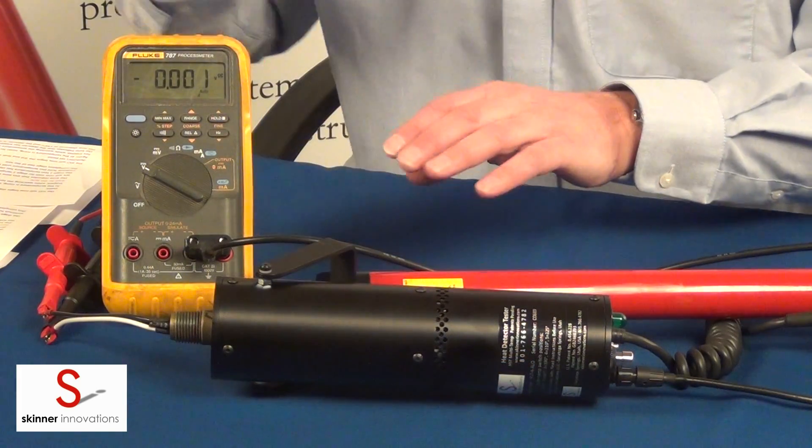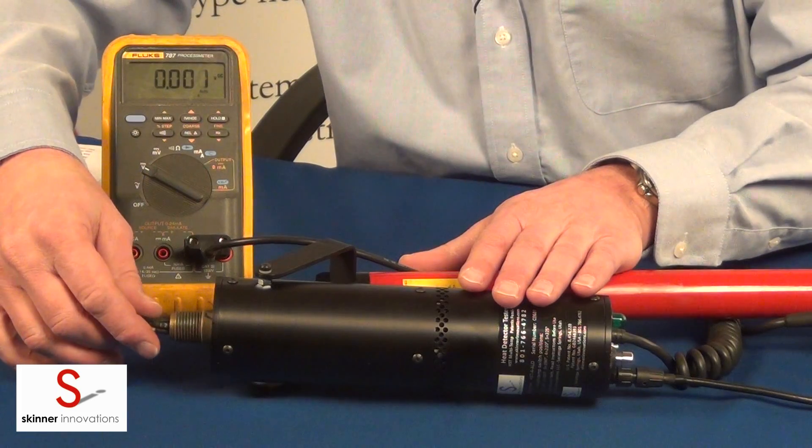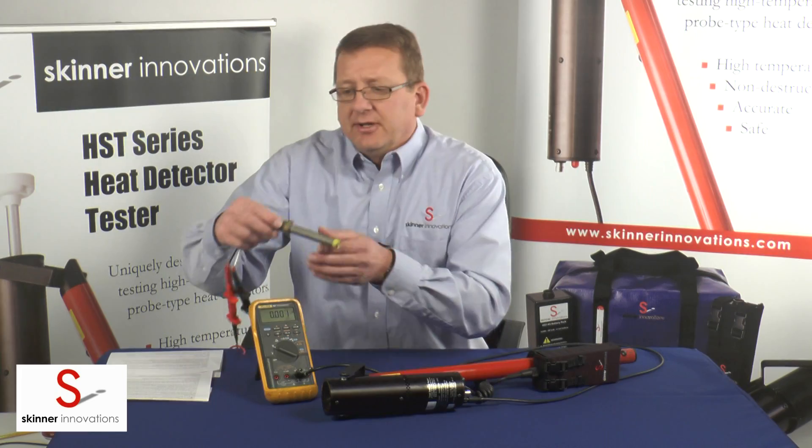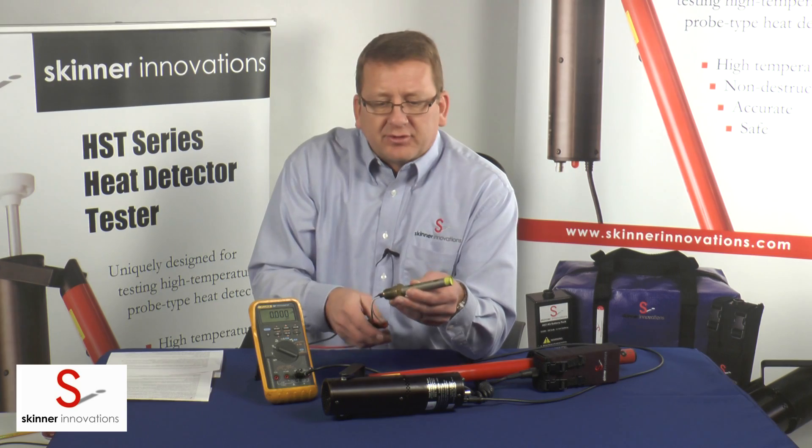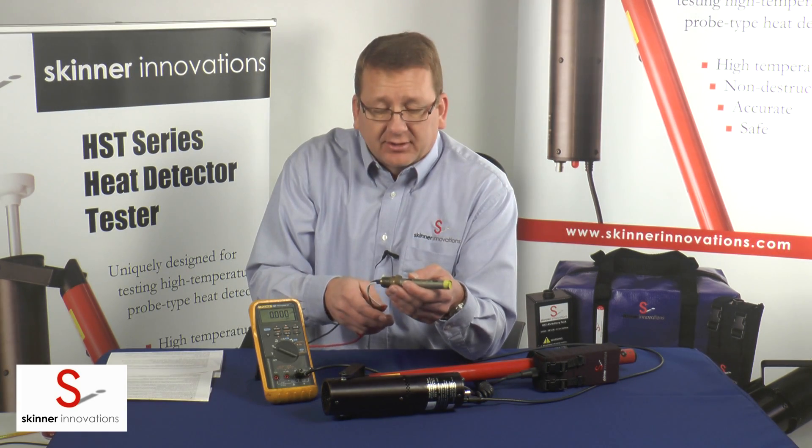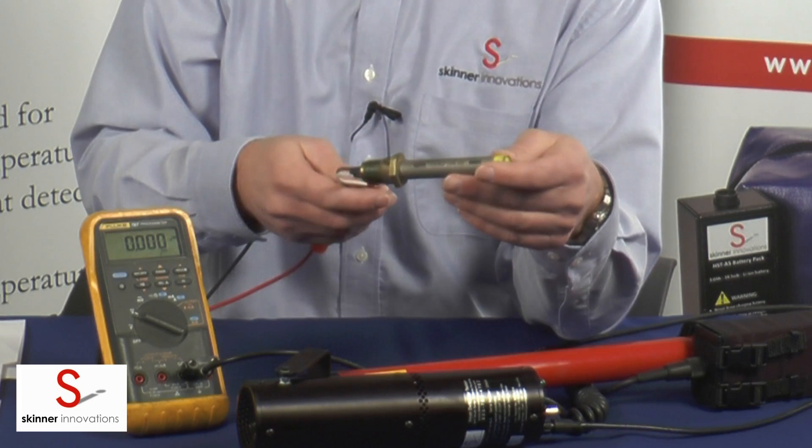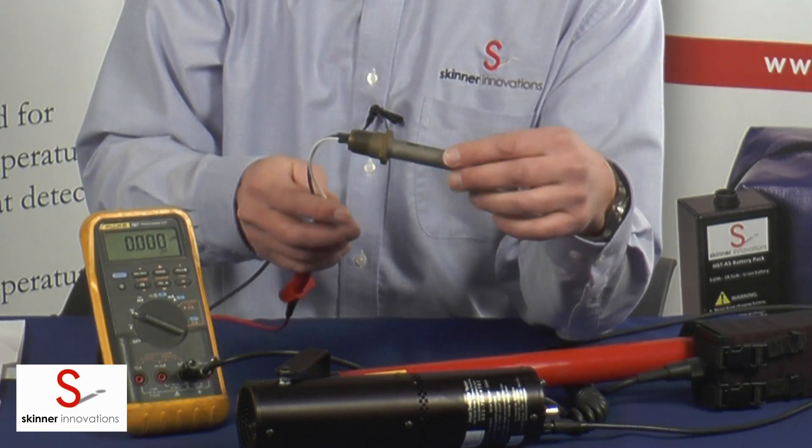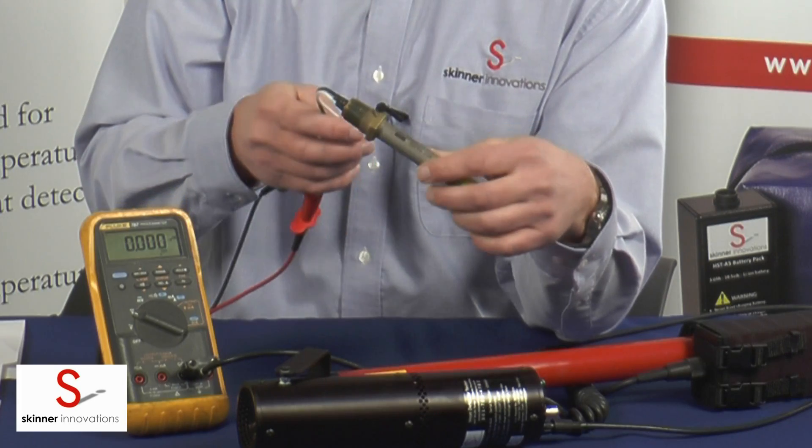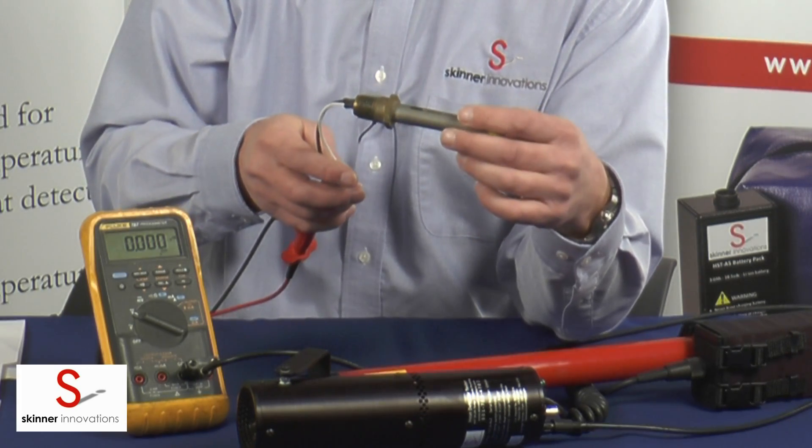First thing you want to do when you're testing the rate compensated heat detector is to determine the manufacturer model and temperature set point of the detector that you're testing. This particular detector is a Fenwal Detectifier 140 degrees Fahrenheit set point.